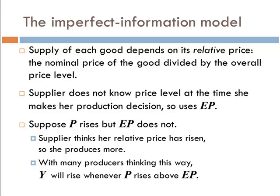Suppose the price rises but the expectation does not. The supplier thinks her relative price has risen — she thinks people like her goods, so she produces more. When many producers think this way, output Y will rise whenever price rises above the expected value, but only in the short run, because you're only going to get fooled for a short while. Eventually, you figure out what the price level is and readjust based on your new expectation.